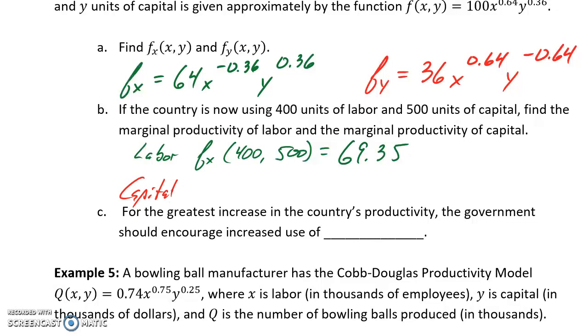We want to do the same thing for marginal productivity of capital, except that we want to plug 400 and 500 into our partial derivative with respect to y, which will give us a result of 31.21.